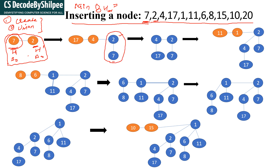After the union operation we get a tree with 2 as root and 7 as child. The next element is 4, so I have created a binomial heap for 4. Next element is 17, I have inserted 17 as H. Now both trees have the same degree, so we perform union. After performing the union we get a new tree, and their degree has changed to B1.